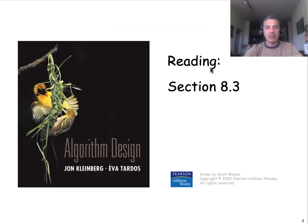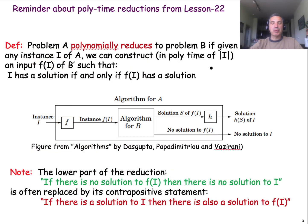This is the reading from the textbook. So before we start, it would be good to remember from lesson 22 what we mean by polynomial time reductions. So imagine that I have two problems, A and B, and I want to reduce problem A to problem B.